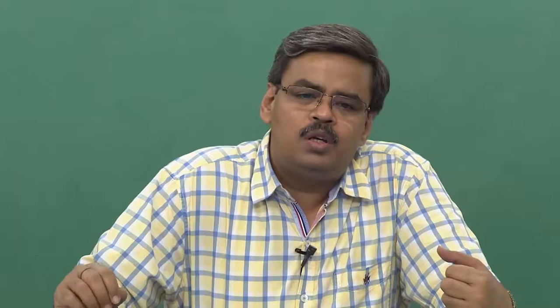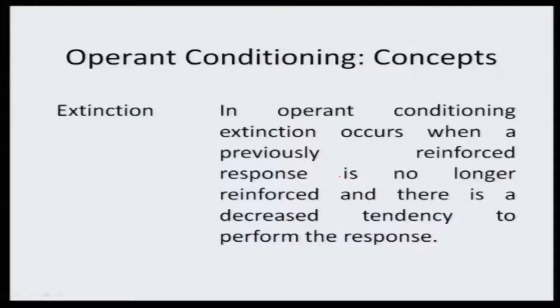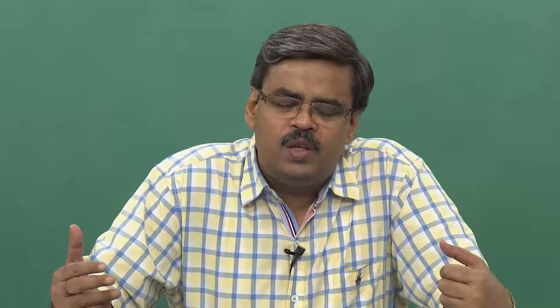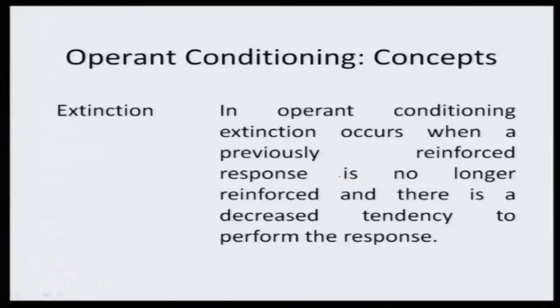Let us now talk about important concepts associated with operant conditioning — similar to what we discussed in classical conditioning. The process of extinction: in operant conditioning, extinction basically occurs when you realize that the previously reinforced response is no longer reinforced. Something that was being given reinforcement — you realize reinforcement is not being given — and once reinforcement stops, that specific response starts diminishing. The tendency of the individual to give that response goes down. Removal of reinforcement leading to complete fading out of the desired response is called extinction.